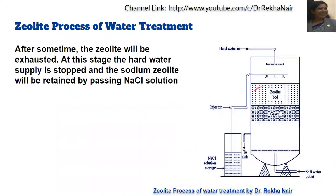After some time, the zeolite becomes exhausted because all the sodium zeolite is converted into calcium and magnesium zeolite. At this stage, the hard water supply is stopped, as the bed has been completely converted into calcium and magnesium zeolite. The softening capacity of the zeolite bed becomes lesser compared to the initial stage, so we need to regenerate it and get the sodium zeolite back.